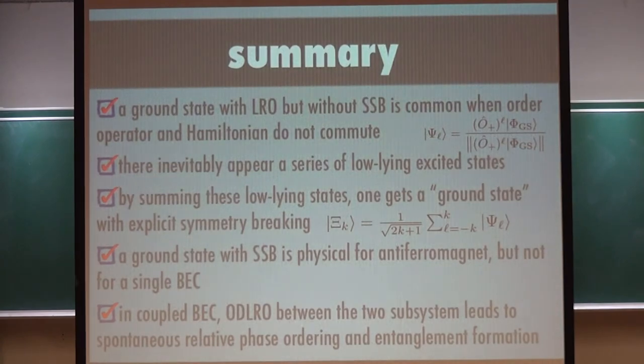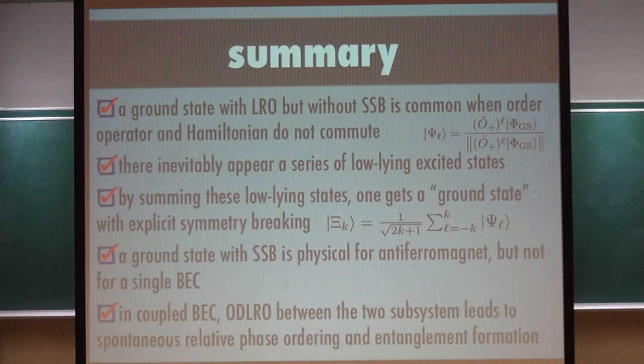Number conservation and off-diagonal long-range order inevitably lead us to entanglement, and this kind of thing never happens in high-temperature paramagnets. So this is my summary. Thank you.